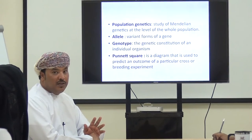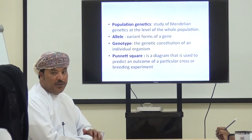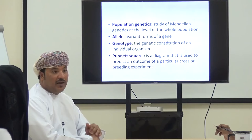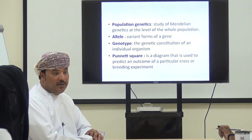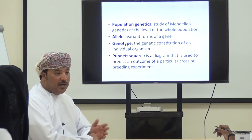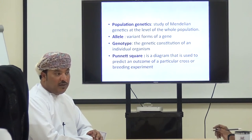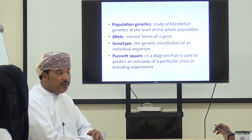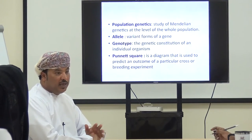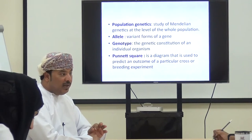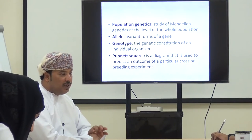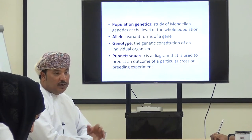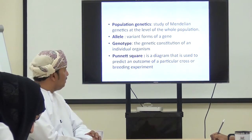Some diseases actually need more than two alleles to appear, so you may have three alleles or four alleles. Usually it's two, but an allele is a form of the gene — it's a variant of the gene.